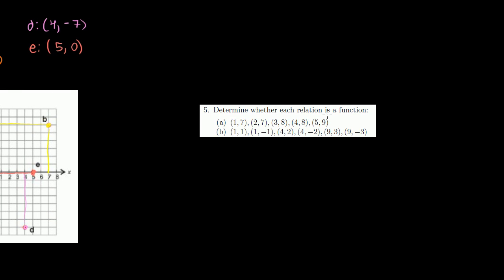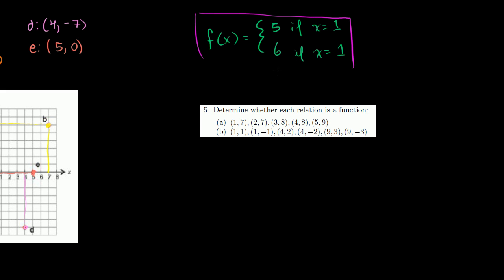Now problem 5: determine whether each relation is a function. The trick is to realize that a relation is not a function if they define two values for a given x. For example, if f(x) equals 5 when x equals 1, but also equals 6 when x equals 1 — that makes no sense. If you put 1 in, you don't know what you'll produce — a 5 or a 6? This is not a function. If for the same input value they define two different output values, it's not a function.